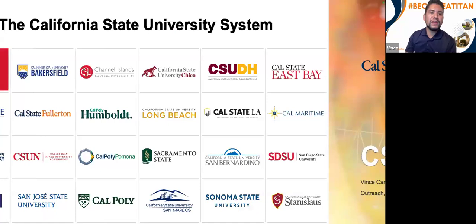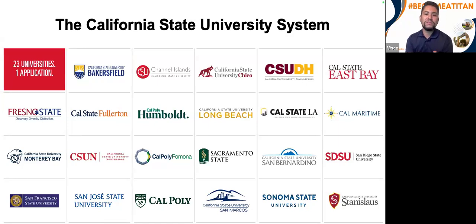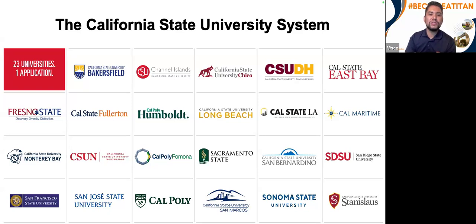If you're not familiar, the California State University System has 23 universities — you can see all of those universities listed here, all the different options across the state of California. The really unique thing about our system is that we all share one application system, so you can go on to CSU Apply to submit your application for any programs at all of these institutions.